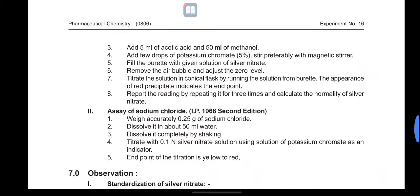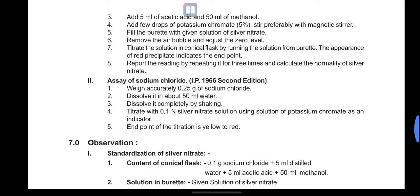For the assay procedure: dissolve 0.25 gram of the sodium chloride sample in 15 ml water, dissolving completely by shaking. Titrate with 0.1 normal silver nitrate solution using potassium chromate solution as an indicator. The end point is a change from yellow to a brick-red precipitate.